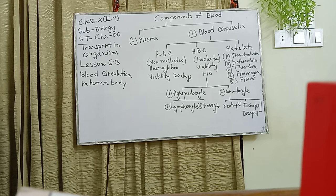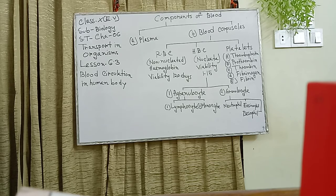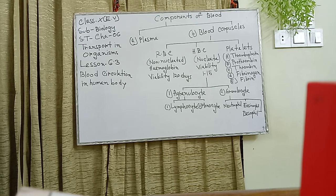The last structure is platelets, or thrombocytes — a very important topic because it involves blood clotting. Platelets are small in size, colorless, and round or oval in shape. Their number is comparatively high in the body. They originate in the bone marrow. Their average viability is 5 to 10 days only. They help in blood clotting.